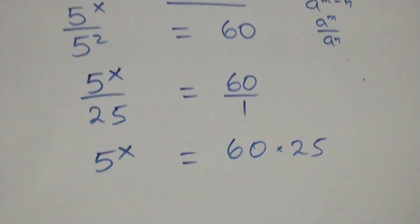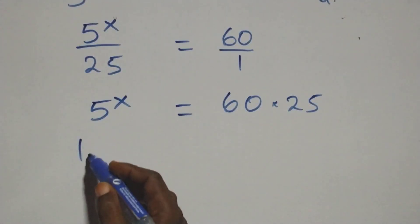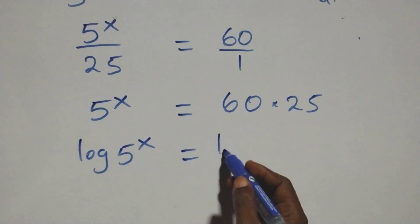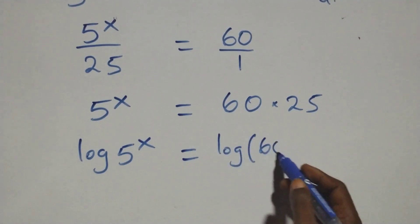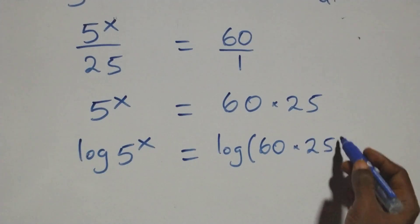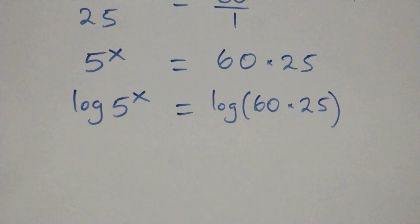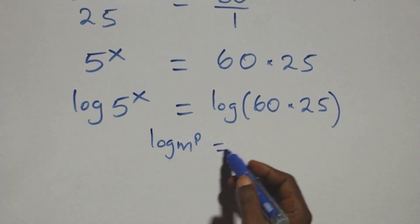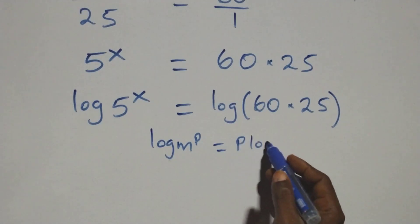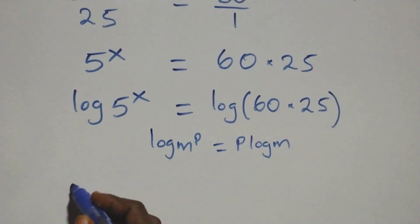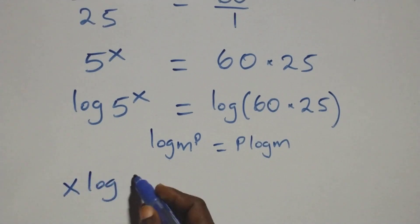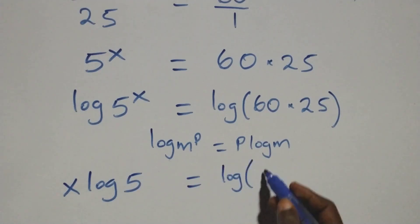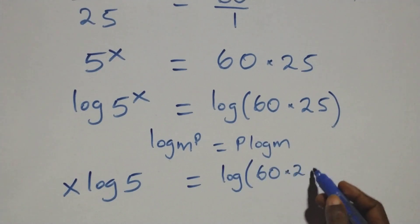From here, we take the log on both sides: log of 5 raised to power x equals log of 60 times 25. We apply the power rule of logarithms — log of n raised to power p is the same as p times log n — and we have x log 5 equals log of 60 times 25.